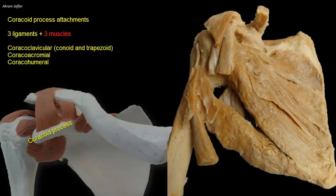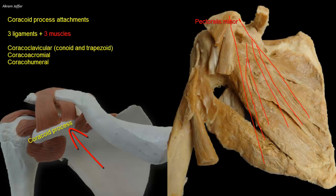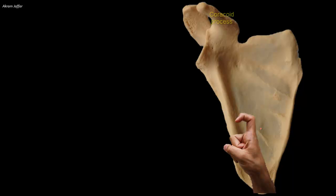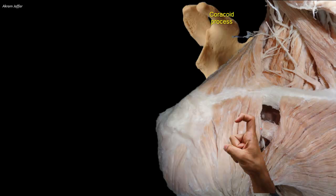These are pectoralis minor, which is attached to the medial border of the coracoid process. The tip of the coracoid process provides attachment to the short head of biceps and the coracobrachialis muscle. Remember that the long head of biceps is attached to the supraglenoid tubercle of the scapula within the capsule of the shoulder joint. The coracoid process can be felt by palpating deeply below the clavicle at the lateral side of the clavipectoral or deltopectoral triangle, under cover of the anterior margin of deltoid muscle.